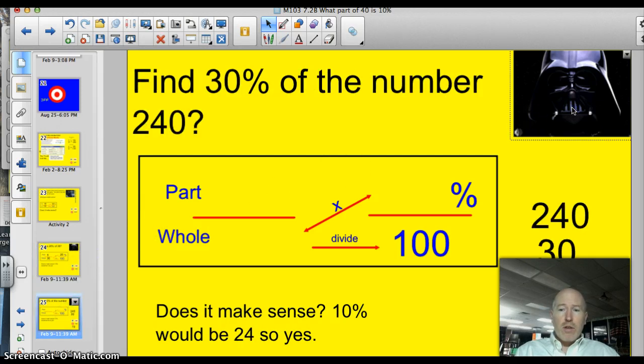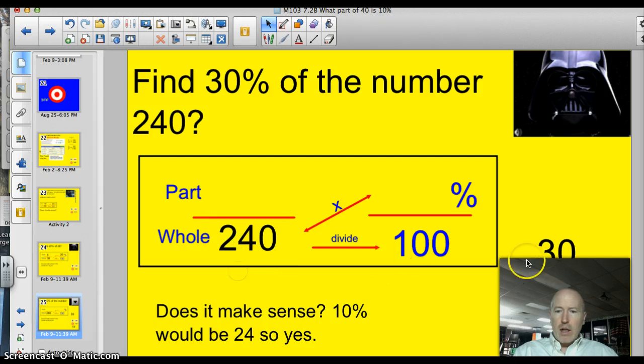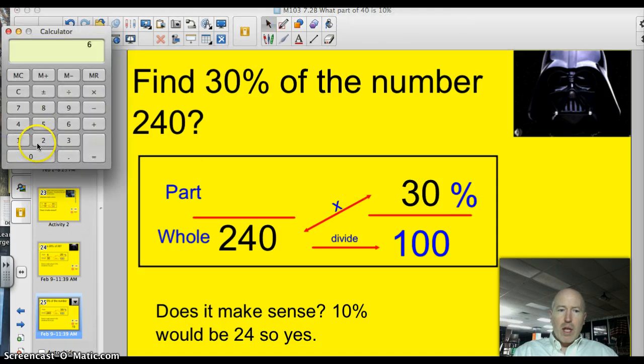Alright, what else do we got to know, Darth? Don't underestimate the power of the box, Luke. Alright, thanks, Darth, for those words of wisdom. Maybe he'll learn something new one of these times. Alright, find 30% of the number 240. Okay, so we know that the whole is 240, so we'll place that in there and find 30%. That's easy. We just put that next to the percent sign. So, get the calculator out, multiply them out. We should clear it first. 240 times 30, and then we'll divide by the third number, which is 100.